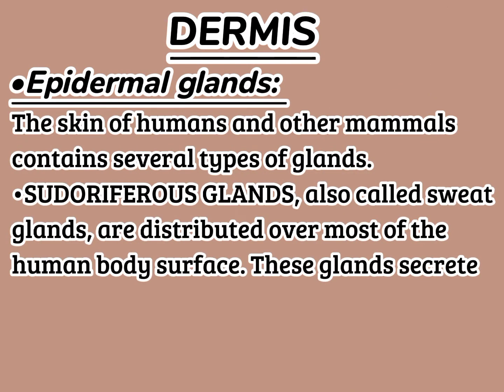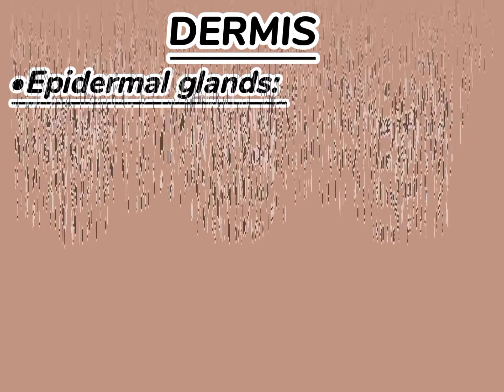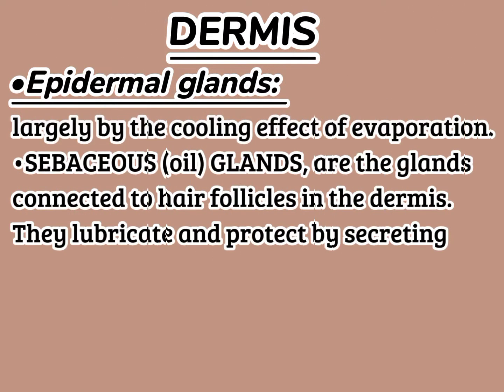The skin of humans and other mammals contains several types of glands. Sudoriferous glands, also called sweat glands, are distributed over most of the human body surface. These glands secrete sweat by a process called perspiration. Perspiration helps to regulate body temperature and maintain homeostasis, largely by the cooling effect of evaporation.